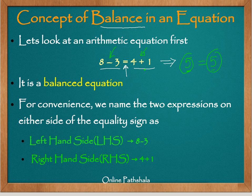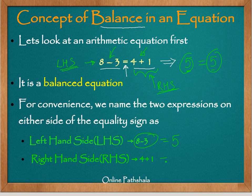For convenience, we name the two sides of an equation. The side towards your left is called the left hand side, or LHS, which is 8 minus 3 and evaluates to 5. The other side is called the right hand side, or RHS, which also evaluates to 5. The two takeaways are: the equation must evaluate to the same value on both sides, and we name the two sides LHS and RHS based on your viewing direction.